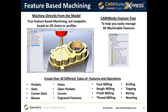CamWorks Express uses the latest in feature-based machining technology, not chains and profiles like obsolete CAM systems. There's a CamWorks Express feature tree to help you manage your features, and you can create over 20 different features and operations. Milling features like pockets, slots, corner slots, and bosses are all supported. Other features like holes, open pockets, curves, and engraving features are also available.